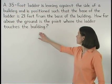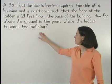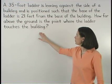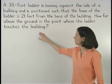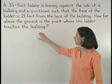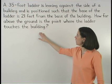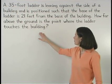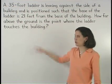A 35-foot ladder is leaning against the side of a building and is positioned such that the base of the ladder is 21 feet from the base of the building. How far above the ground is the point where the ladder touches the building?